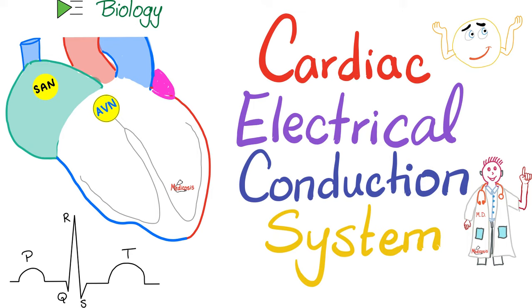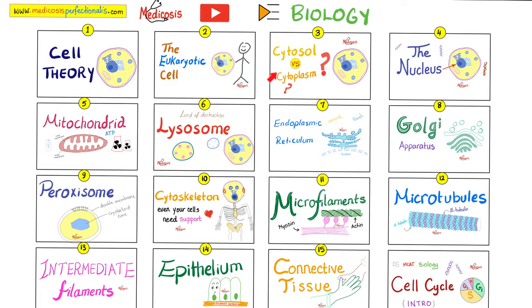If you cut the heart out of the chest, what happens? It continues to pump — even after cutting the nerves. The heart doesn't need nerves. The heart has automaticity; it can start its own impulses. Of course, after the heart is out of the chest for about five minutes or so, it will stop because there is no oxygen coming to it.